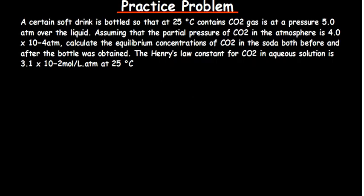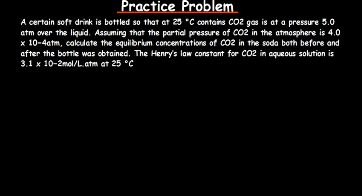Let's look at a practice question to understand how we apply Henry's Law for calculations. In some textbooks, instead of using s subscript g, they use cg to denote the formula for Henry's Law. The question: a certain soft drink is bottled at 25°C and contains carbon dioxide at a pressure of 5 atm over the liquid. Assuming the partial pressure of carbon dioxide in the atmosphere is given, calculate the equilibrium concentrations of CO₂ in the soda both before and after the bottle is opened.